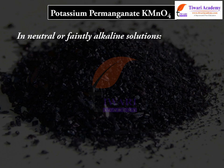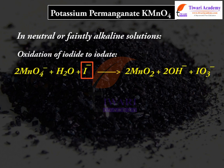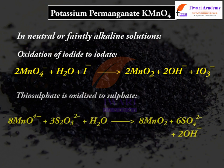In neutral or faintly alkaline solutions, iodide is oxidized to iodate: 2MnO₄⁻ + H₂O + I⁻ → 2MnO₂ + 2OH⁻ + IO₃⁻. Thiosulfate is oxidized to sulfate: 8MnO₄⁻ + 3S₂O₃²⁻ + H₂O → 8MnO₂ + 6SO₄²⁻ + 2OH⁻.